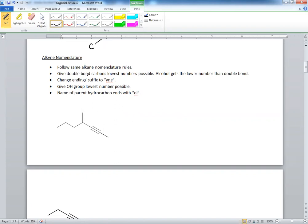You follow the same rules. However, if you have a double bond, you give the double bond a lower number, but the name still ends with Y-N-E. Of course, the alcohol gets the lower number than the double bond, so the alcohol is the highest.